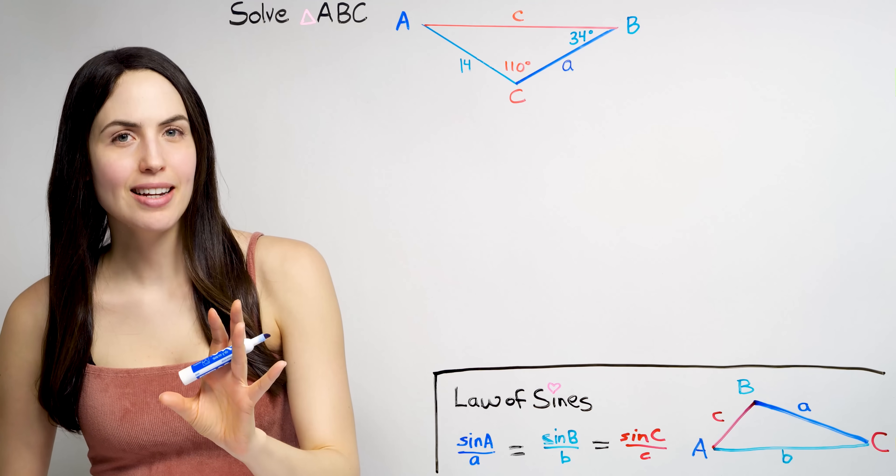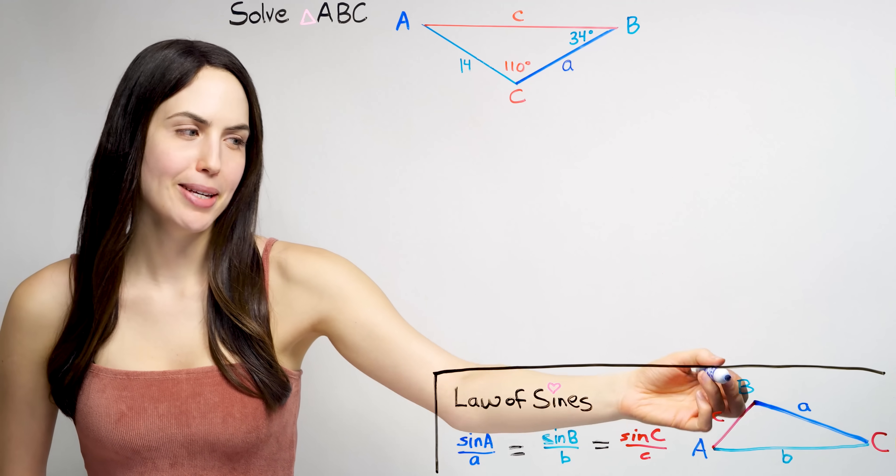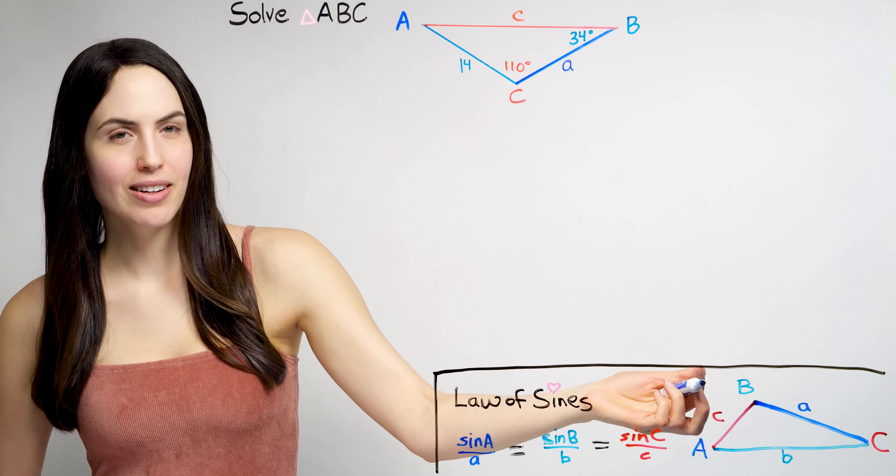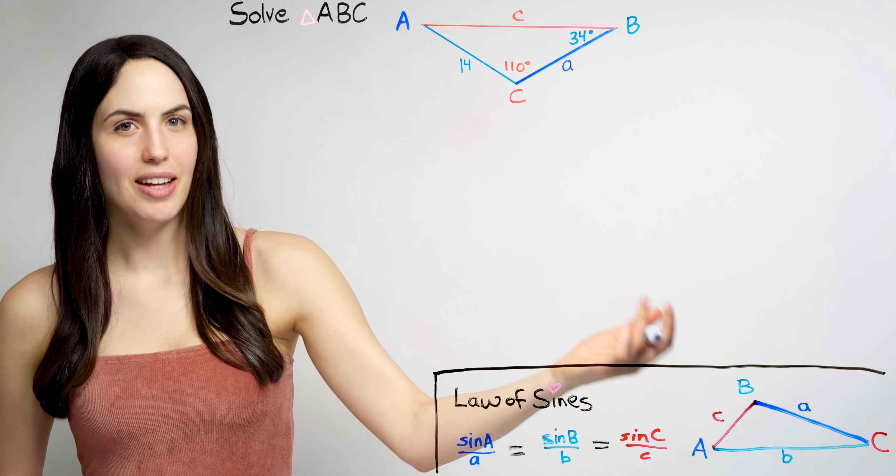What is that? Don't panic. It's going to be really easy for you. Here, capital A, B, C are the angles in the triangle. And little lowercase a, b, c are the sides, the lengths.